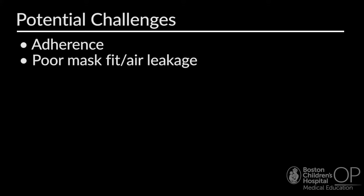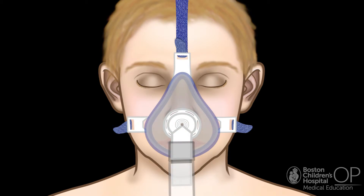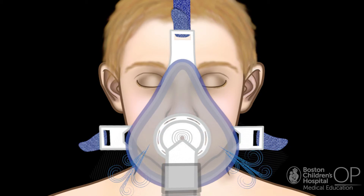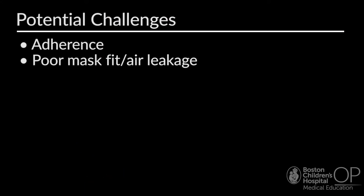Another potential issue with BiPAP and CPAP in the home is poor mask fit or air leakage. You should feel air coming out of the vents on the side, which is exhaled carbon dioxide, but you shouldn't feel air escaping from where the mask is touching the skin. This can be particularly challenging with children who have craniofacial anomalies — this is also one of the issues Jack's family has faced. Another potential issue is skin breakdown. Alternating between two different types of masks can help prevent irritation, and families can also use a silicone foam dressing as a barrier.